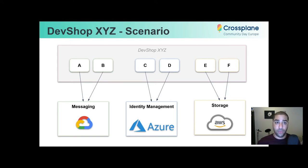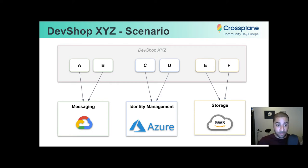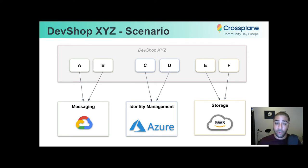So let's take a look at a scenario to describe these providers a bit more. In this example, we have a fake company called DevShop XYZ. DevShop XYZ is leveraging the multi-cloud strategy. For this example, they like the messaging provided by GCP, they like the identity management provided by Azure, and they like the storage feature set provided by AWS. So here we have multiple clouds — we're talking about supporting three different clouds, which is a lot of different work.